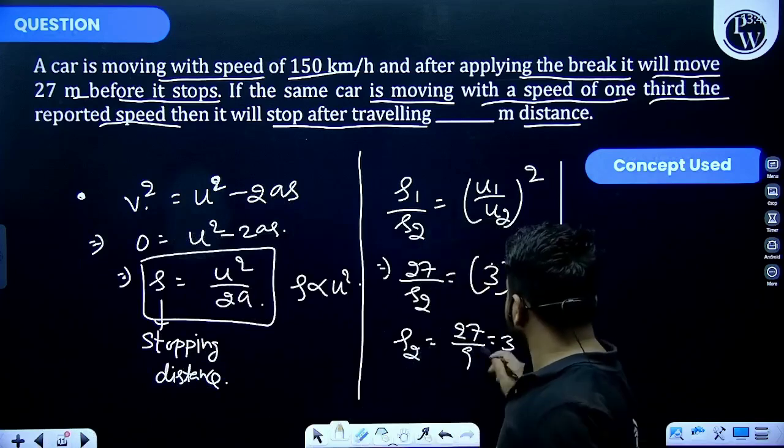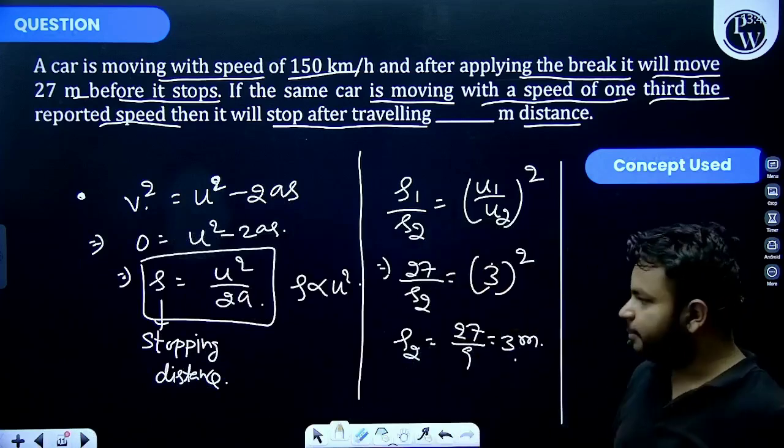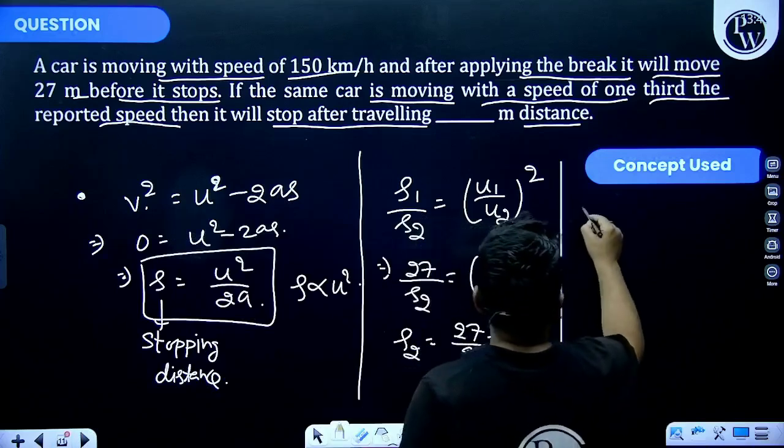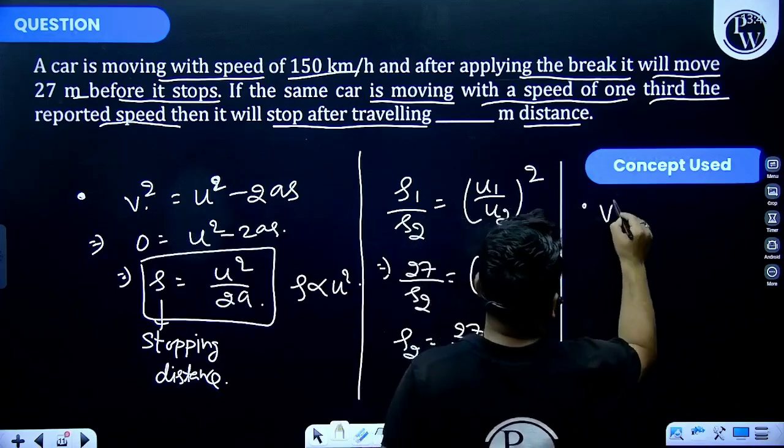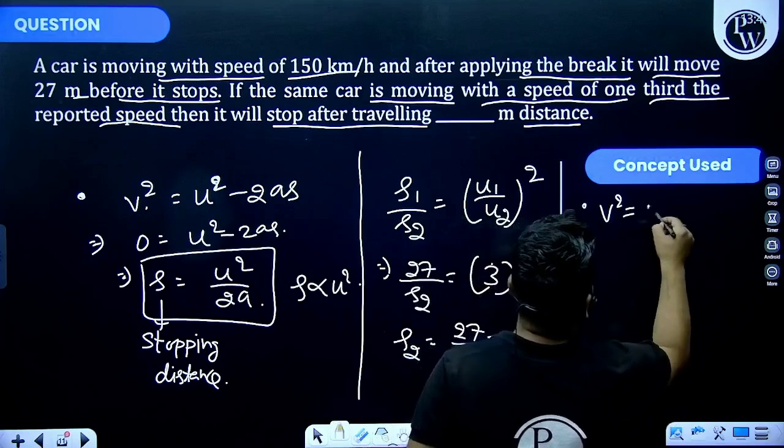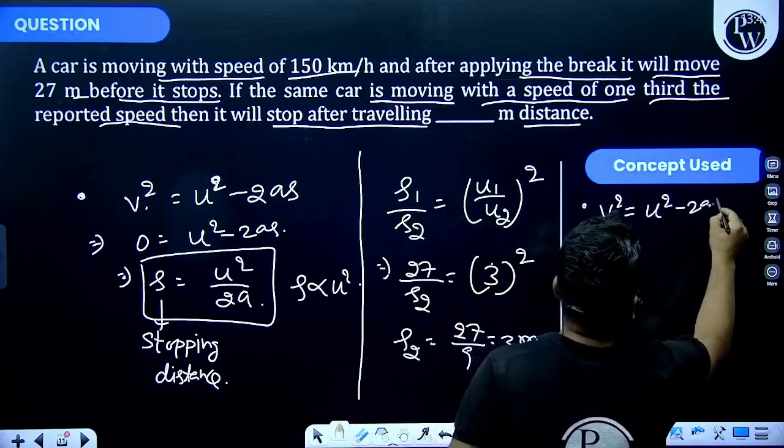The concept that is being used for this problem is equation of motion: v² is equal to u² minus 2as.